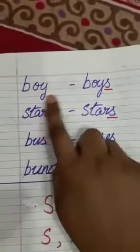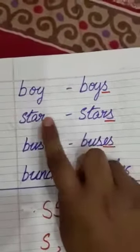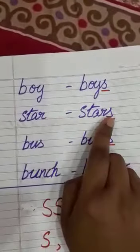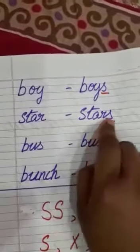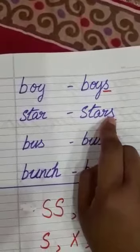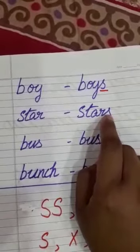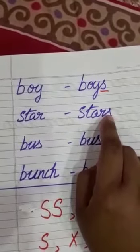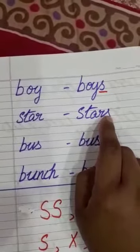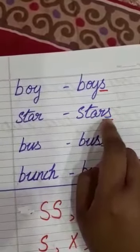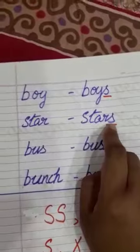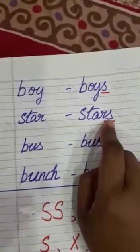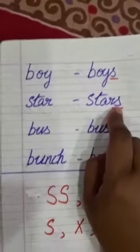The same examples: boy, boys, star, stars. So that you already know that if it is plural, you can add S to the word and we will get the plural of that word.